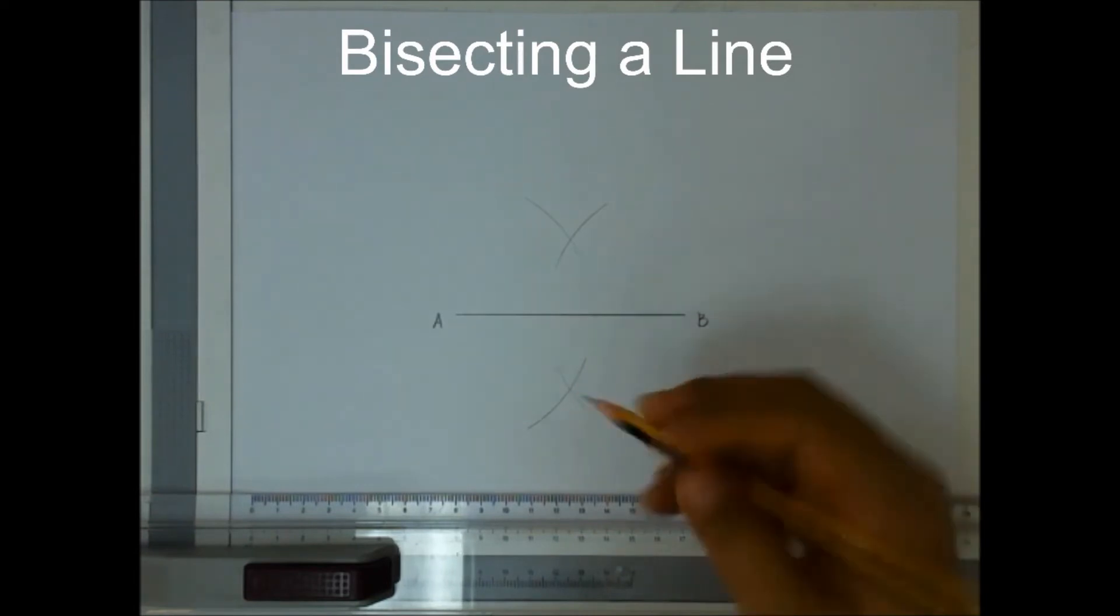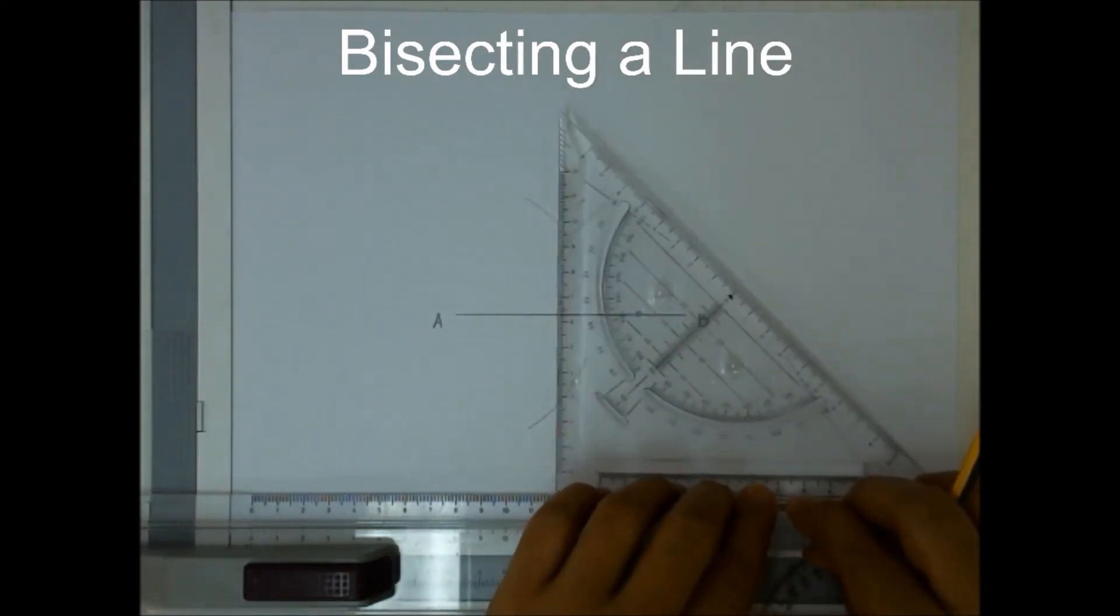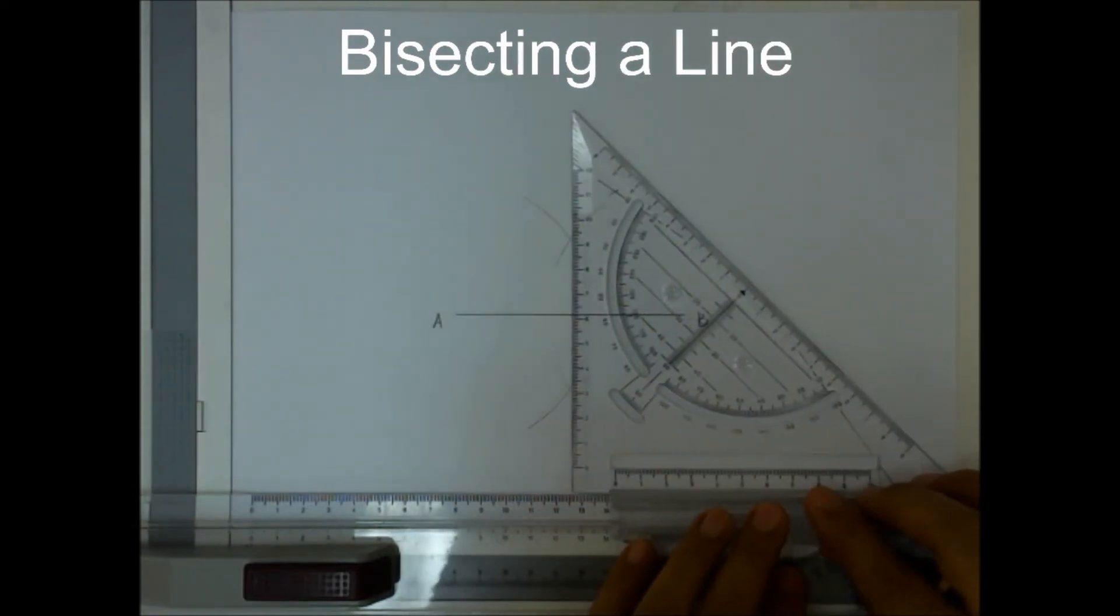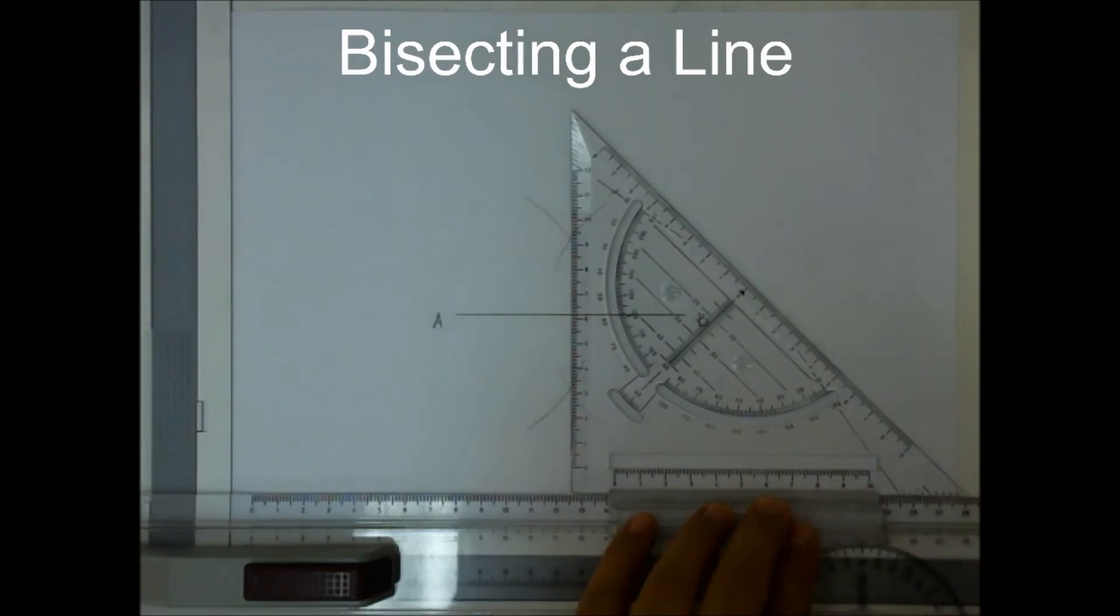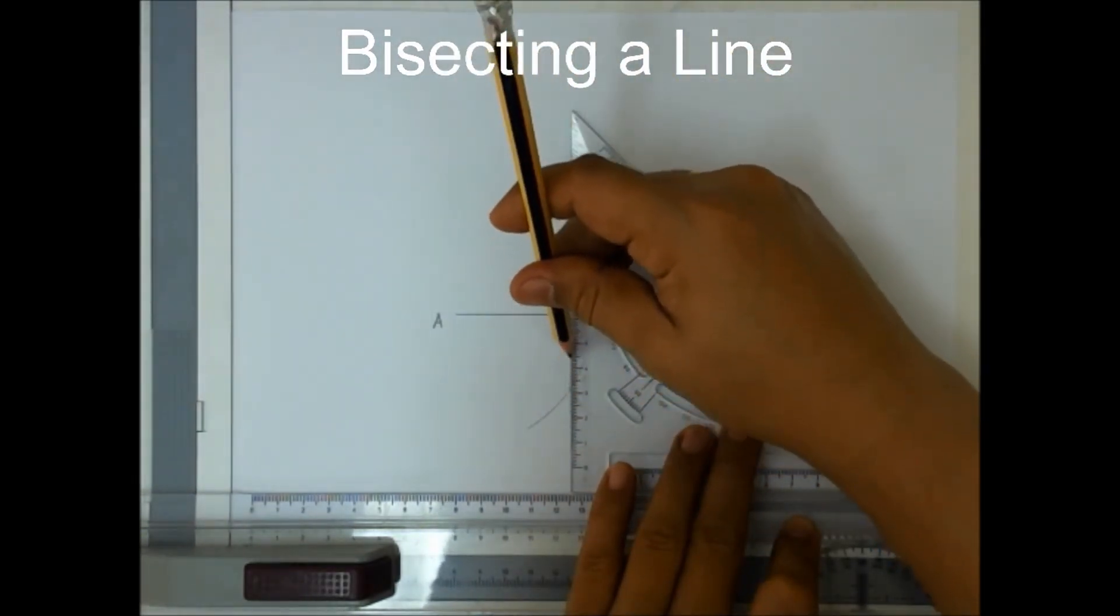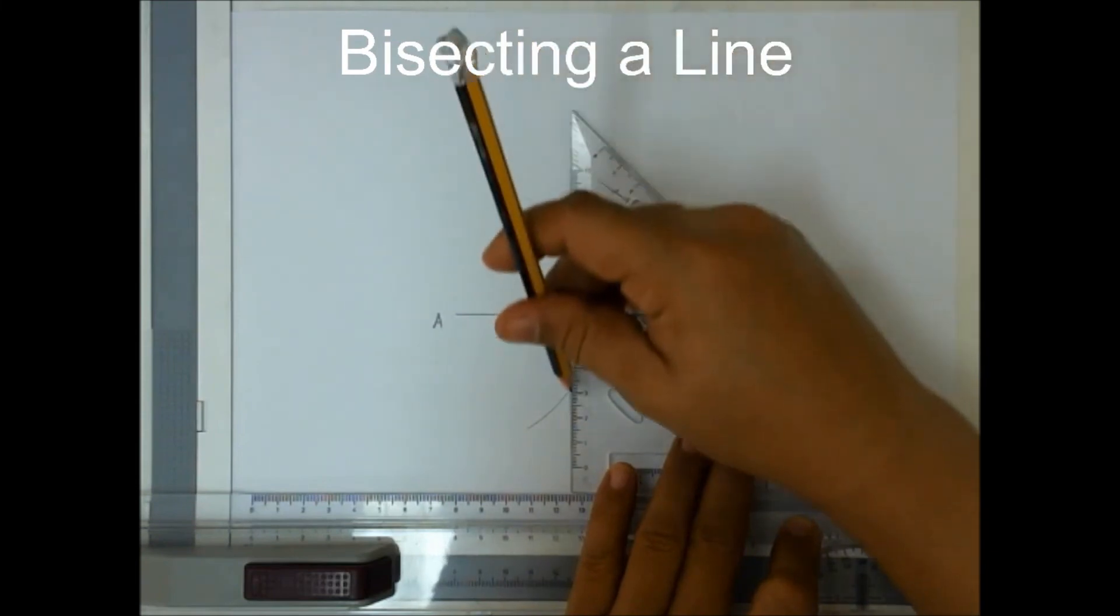Now using my triangle, I will now connect these two new intersections from this point up to this point.